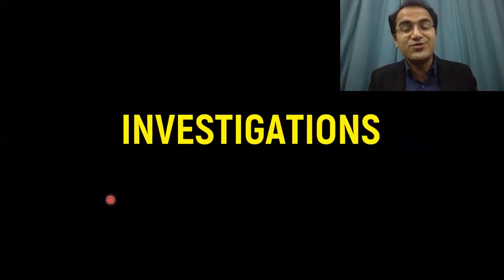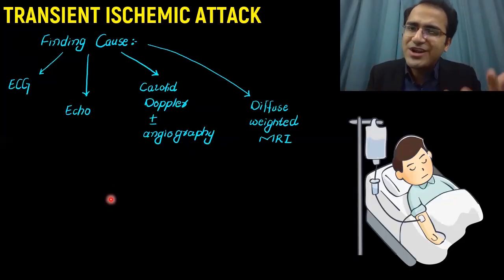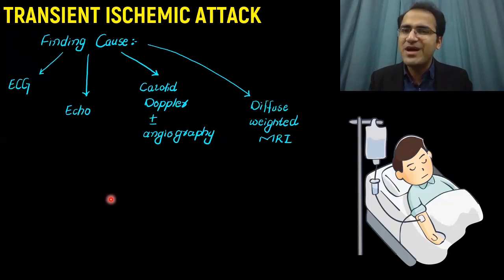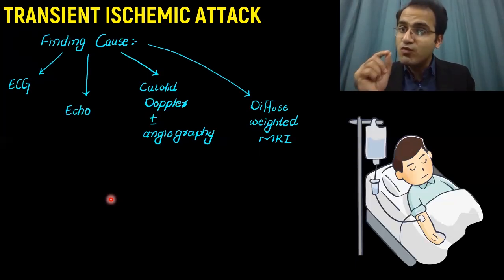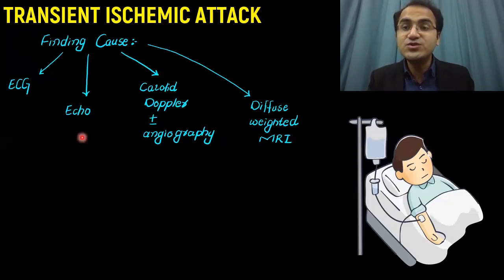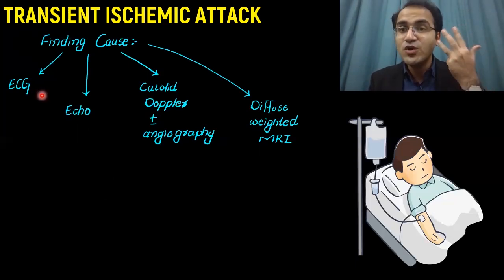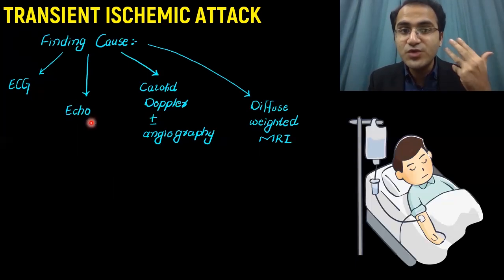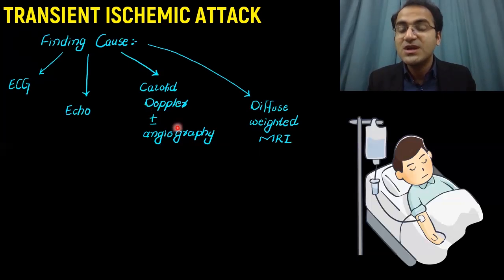Regarding investigations: if a patient presents with a neurological deficit that suddenly resolves and there are no findings on CT and MRI, remember one out of 12 such patients will develop a stroke within a week if not treated. You need to find out why the patient had a TIA. You need to do ECG, echocardiography, carotid doppler with ultrasound of the carotids, and diffusion-weighted MRI of the brain.